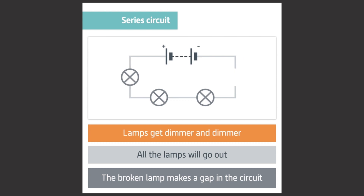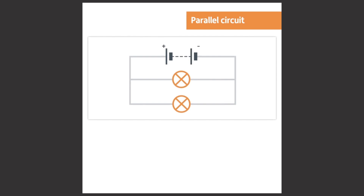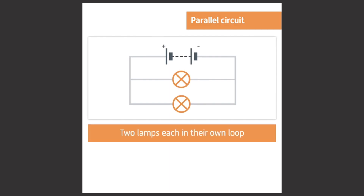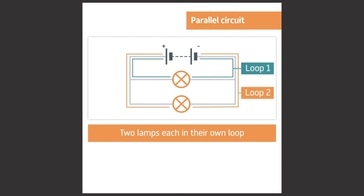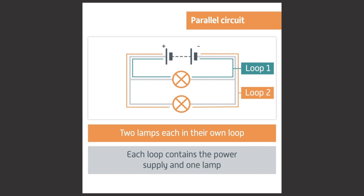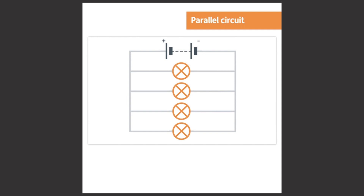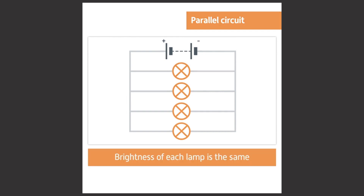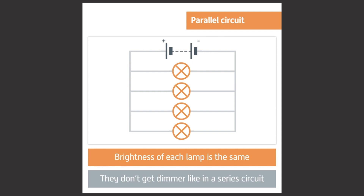A circuit with two lamps in parallel has those two lamps each within their own loop. There are two loops and each loop contains the power supply and one lamp. When you add more and more lamps in parallel, you find that the brightness of each added lamp is the same as the brightness of the first lamp — they do not get dimmer like they did in the series circuit. If one of these lamps were to break, the others would remain lit because they are still within a complete circuit of their own.